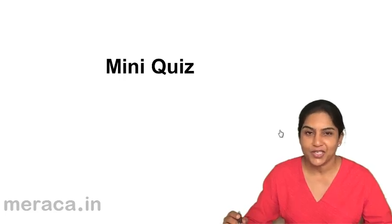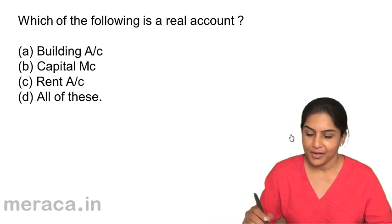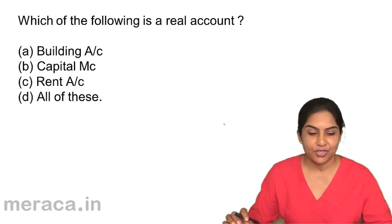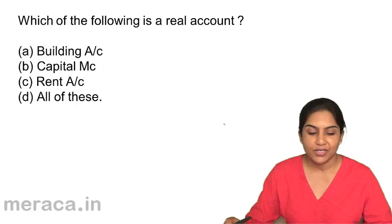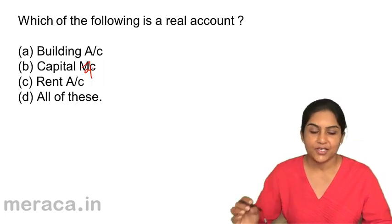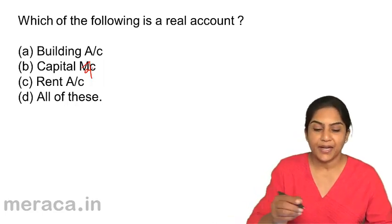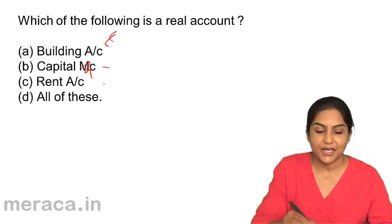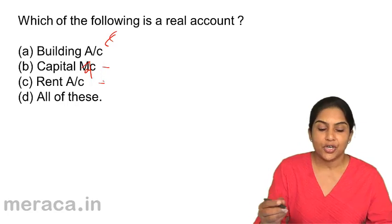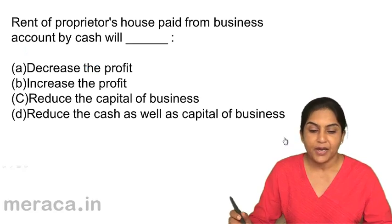A mini quiz to test our understanding so far. Which of the following is a real account? A: building account, B: capital account, C: rent account, D: all of the above. Building is a real account. Capital is a personal account. Rent is a nominal account. So the correct option is A — building account is a real account.